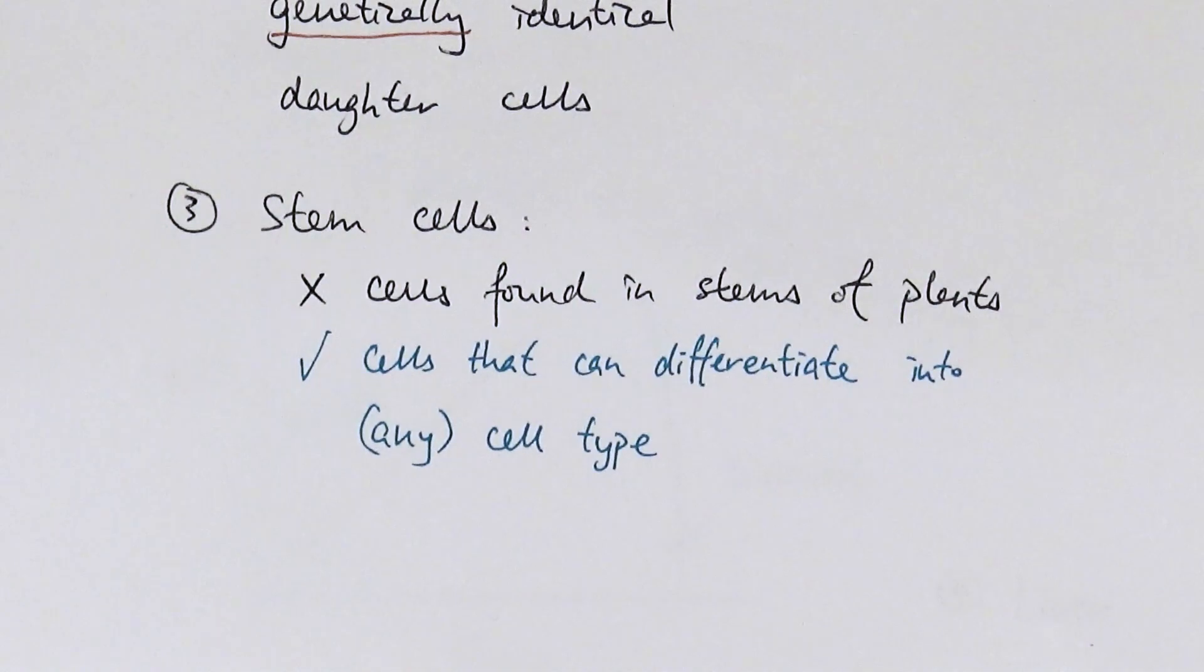The third thing is about knowing what stem cells are. The most common thing is that they think stem cells are cells that are found in the stems of plants. Understandably why you would say that but that is utterly incorrect. The stem cells are cells that can differentiate into, well, any cell type.